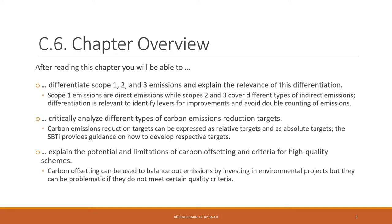You will learn that scope one emissions are the direct emissions of a company or organization, while scope two and scope three cover different types of indirect emissions from the supply chain and beyond. This differentiation is relevant because it helps identify levers for improving a company's carbon performance and also helps avoid double counting of emissions.